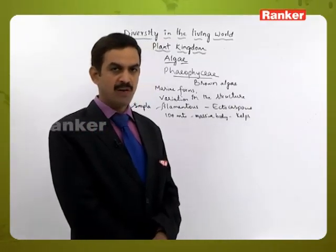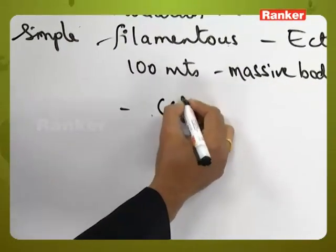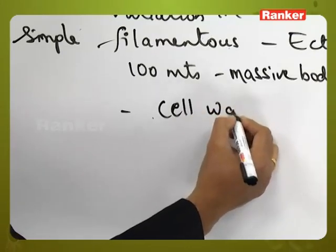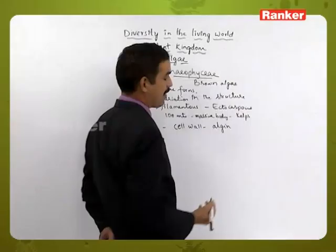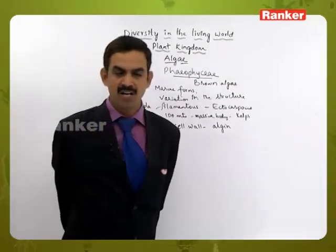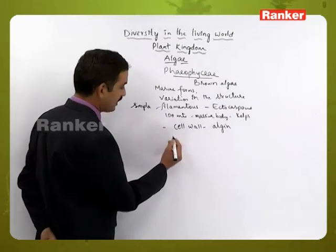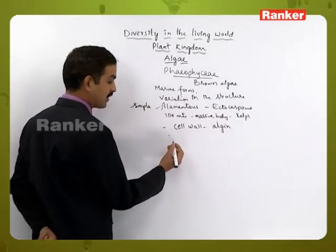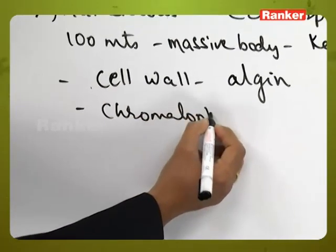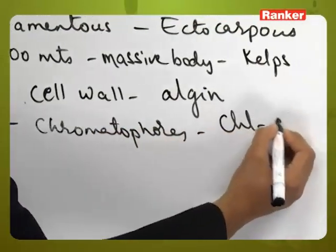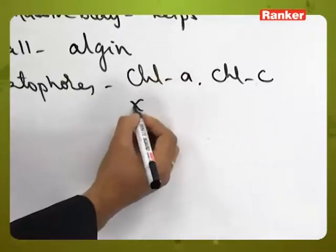There is a lot of diversity in the body organization of Phaeophyceae members. The cell wall contains a special chemical called algin in addition to cellulose — an additional layer above the cellulose cell wall called the algin wall. These members also have chromatophores containing chlorophyll a, chlorophyll c, and xanthophylls.